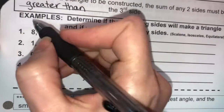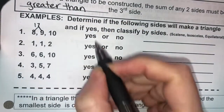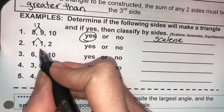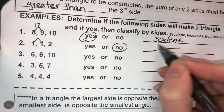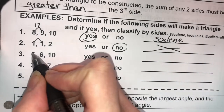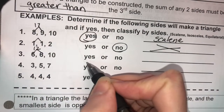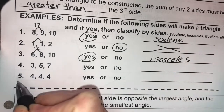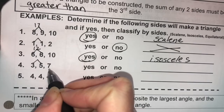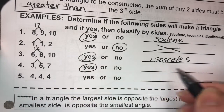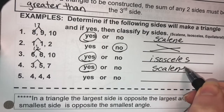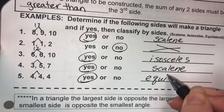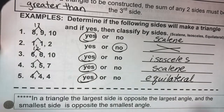Hopefully you've done that. 8 plus 9 is 17, which is bigger than 10. So yes, this is a scalene triangle. 1 plus 1 is 2. 2 equals 2. So no, that one doesn't make a triangle. 6 plus 6 is 12. 12 is greater than 10. So yes, this one makes an isosceles triangle. 3 plus 5 is 8. 8 is greater than 7. So yes, this one makes a scalene triangle. 4 plus 4 is 8. 8 is greater than 4. So yes, this makes an equilateral triangle.